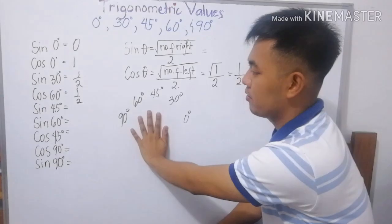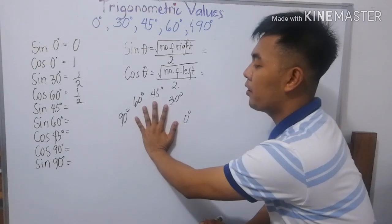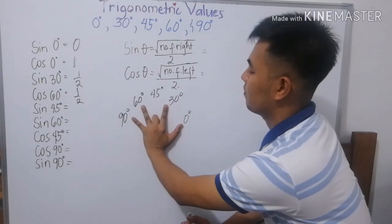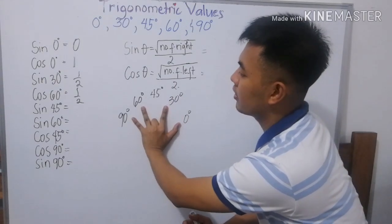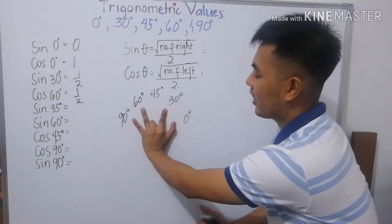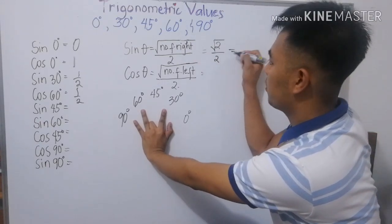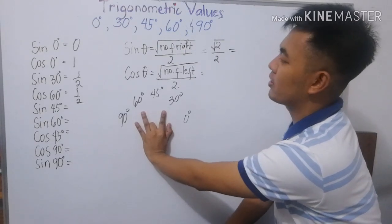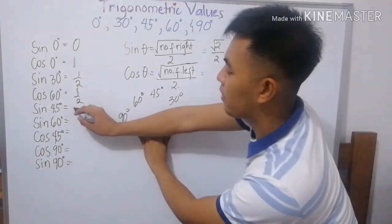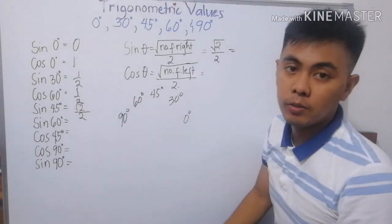Okay. Try natin. Sine 45 degrees. So, pili mo yung 45, yung nasa gitna ng dalire. And then, sine. Ito ang gagamitin. Number of fingers to the right. Ang ginagawin yung nasa kanan. Dalawa. So, square root of 2 over 2. Square root of 2 over 2, walang mas. Hindi mas simplify. Paliban na lang kung gagamitin mo ng calculator. So, ibig sabihin ng sine 45, square root of 2 over 2.